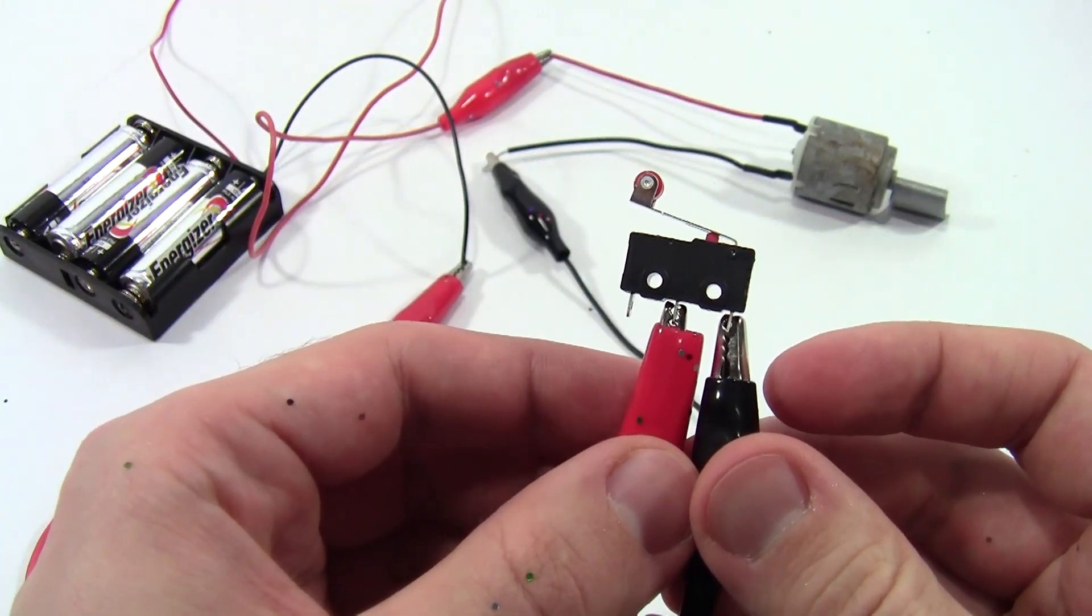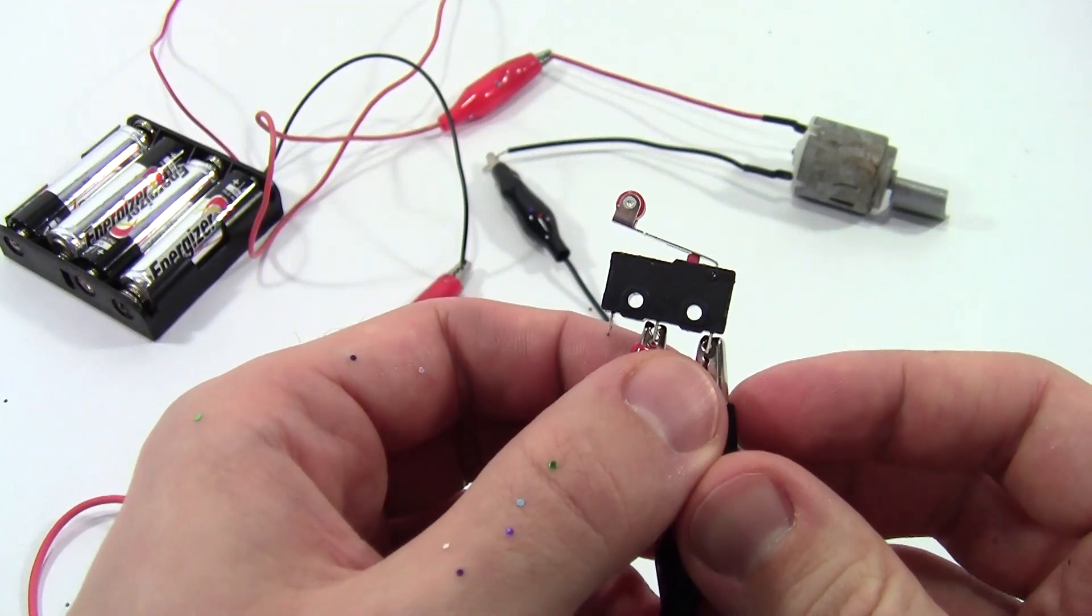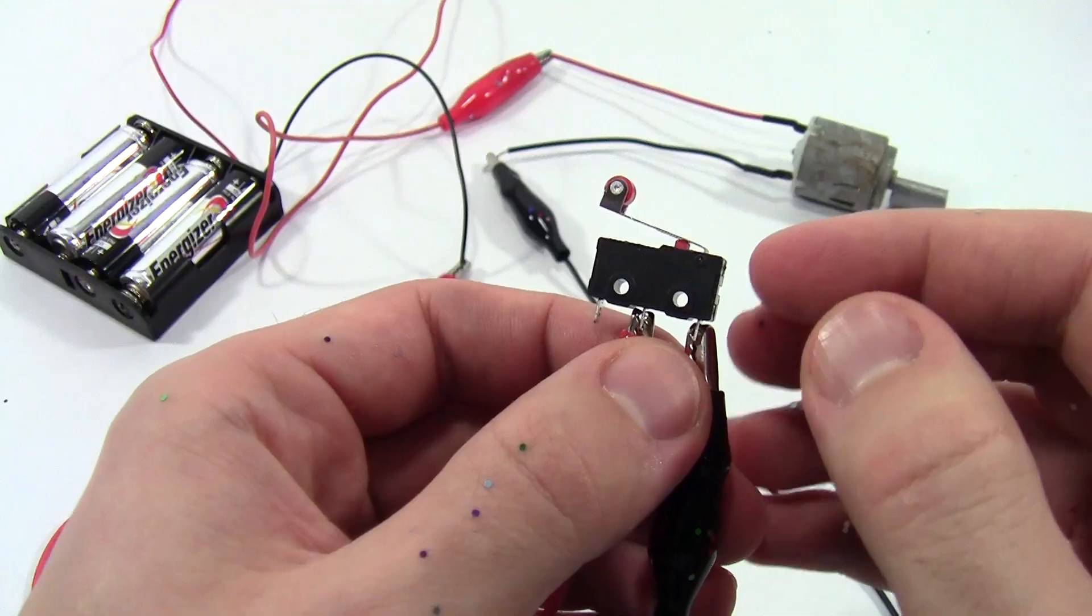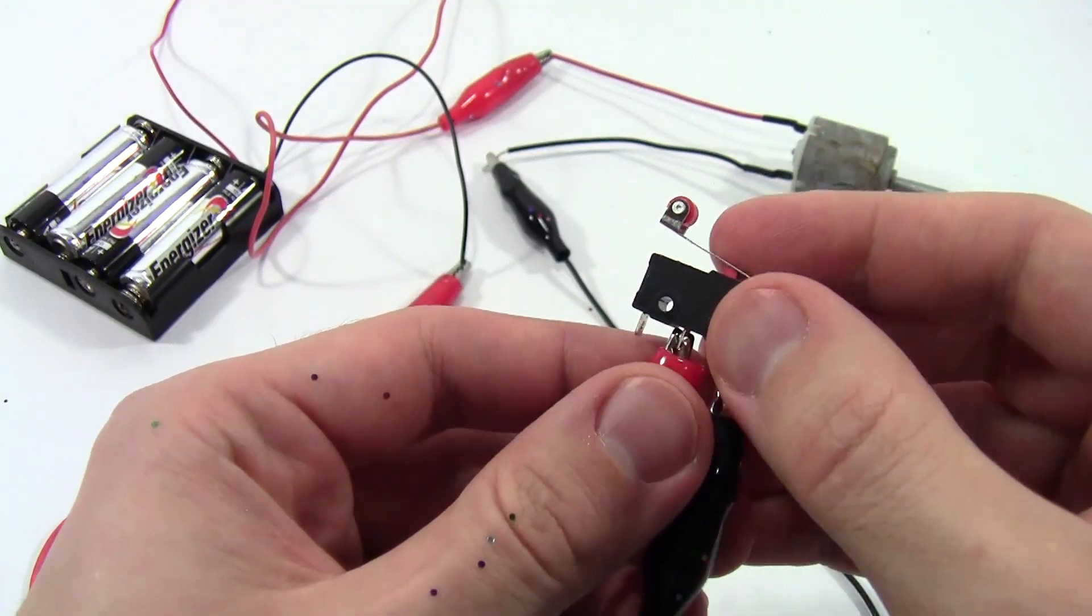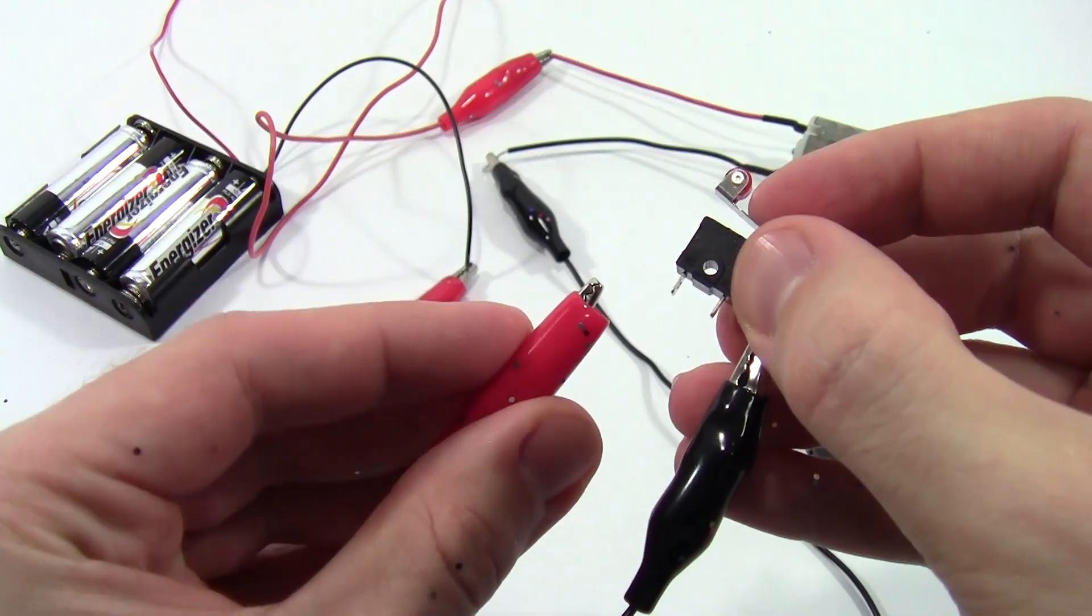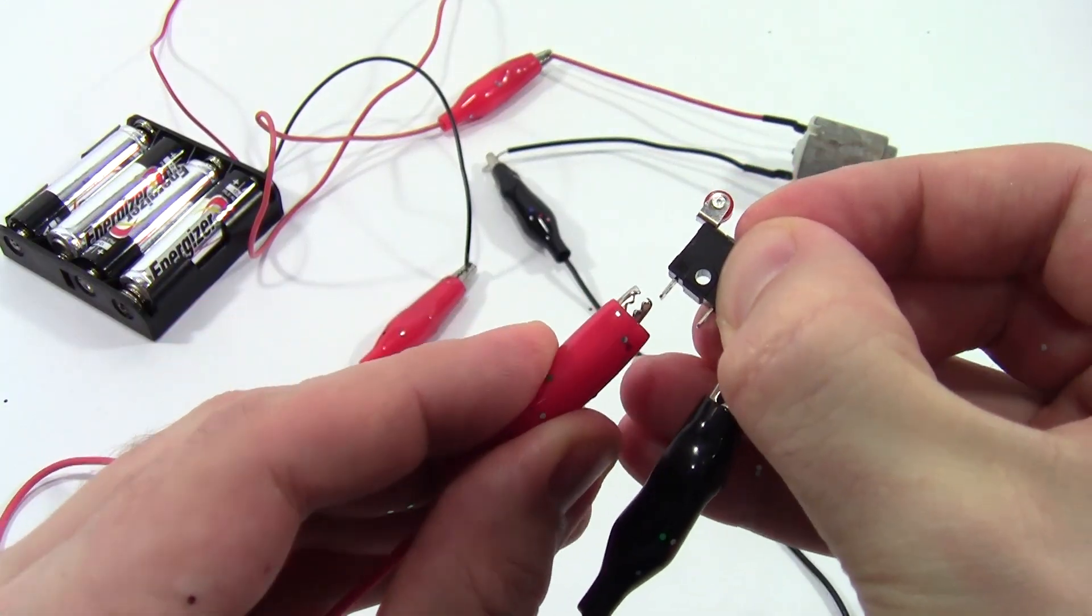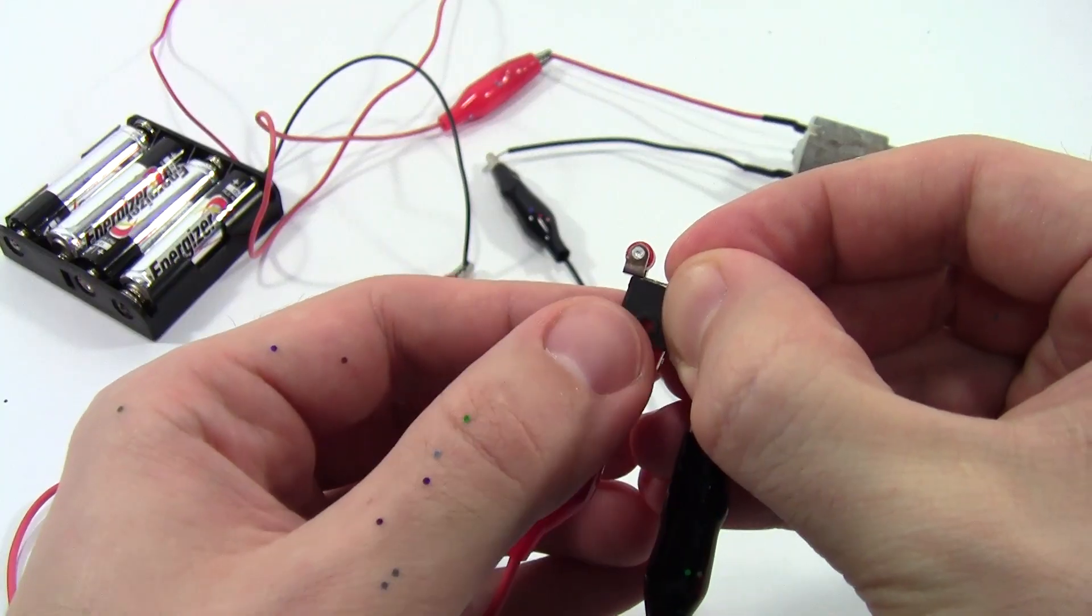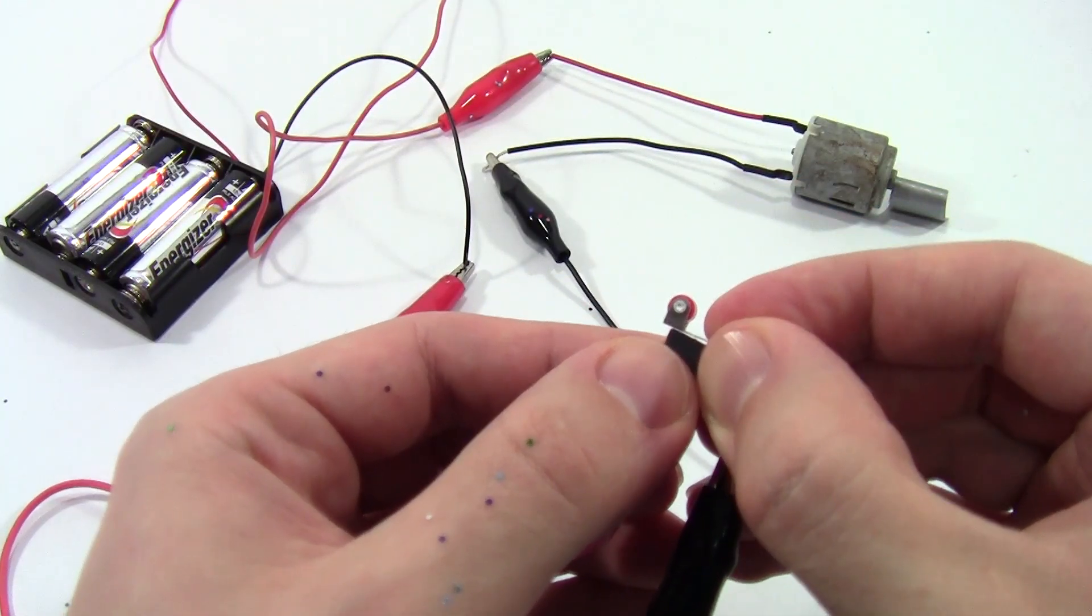You're going to want to hook this up the other way around. When you stick the switch inside your box and close the lid, the switch will be depressed and you want the motor to be off. When you open the lid, the switch will release and you want the motor to turn on. So I'm going to move this contact over to the third connection, depress the switch like it will be when it's inside the box, and now when I simulate opening the lid and releasing the switch, the motor will turn on, dispersing the glitter.